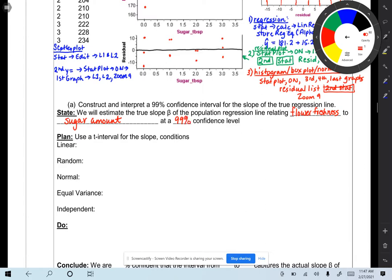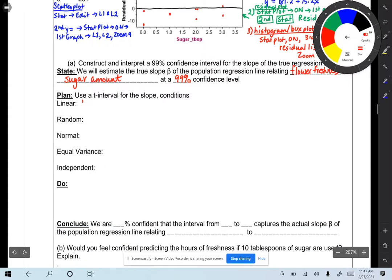Use a T interval for the slope, but here are the conditions first. So for the linear, scatter plot shows a moderately linear association. Now, how did I know that? Because when you calculate your linear regression equation, it shows you what the R value is. And it was pretty, pretty good value. So it gives you your correlation coefficient. The residual plot shows no obvious pattern or curvature for the random.